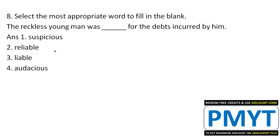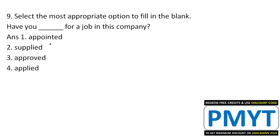Eighth question: 'The reckless young man was ___ for the debts incurred by him.' Focus on 'for' — 'was liable for' and 'responsible for' are relevant. 'Audacious' means full of audacity or bold; 'suspicious' means full of suspicion. The correct answer involves liability. Ninth: 'Have you ___ for the job in this company?' The correct answer is 'applied.'